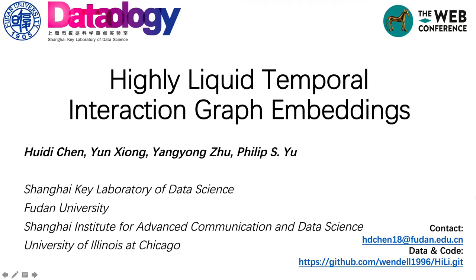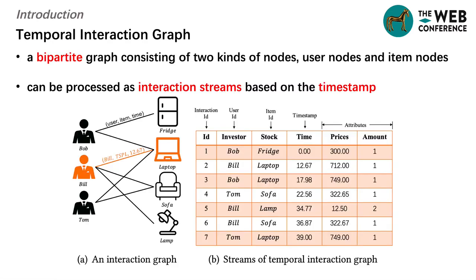Our study is about the highly liquid temporal interaction graph embeddings. Modeling the temporal interaction and predicting the future interactions play a critical role in many domains. The temporal interaction graph can be represented as a table and processed as interaction streams based on the timestamp on each row. As illustrated in this figure, each row consists of a pair of nodes and attributes. The temporal interaction graph is also a bipartite graph consisting of two kinds of nodes: user nodes and item nodes.